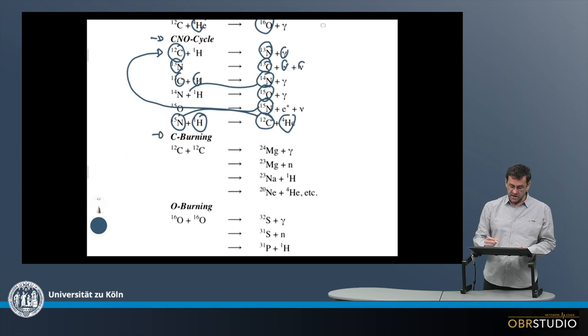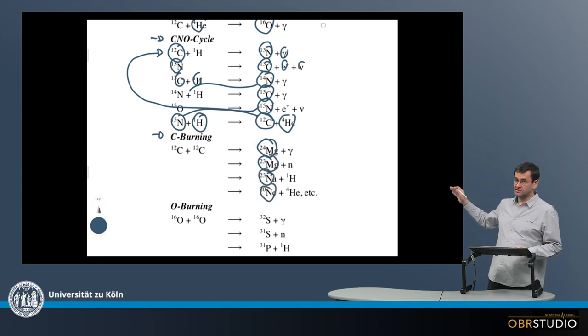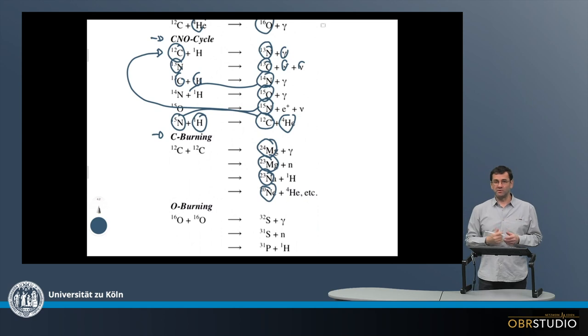After this CNO cycle, there's a carbon burning, and in carbon burning, a couple of isotopes like magnesium-24, magnesium-23, sodium, neon, and so on are formed. Of course, there are then many more elements also produced during these kind of sequences here.